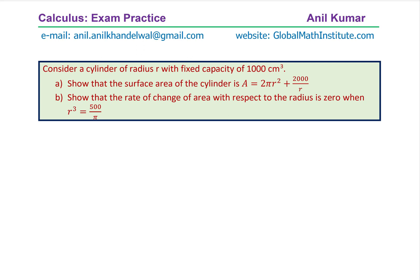So I picked up one of the questions from our practice test. Consider a cylinder of radius R with fixed capacity of 1000 cm³. Part A is, show that the surface area of the cylinder is A = 2πR² + 2000/R, where R is the radius of the cylinder.